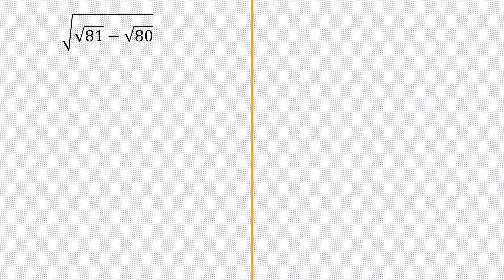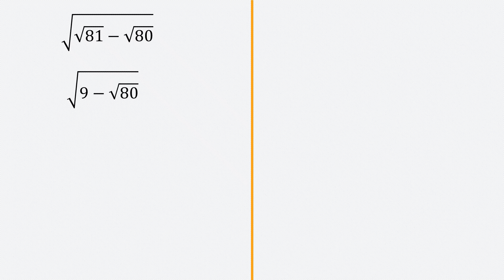The first thing we'll do is simplify the square root of 81, which we know gives us a result of 9. So we have the square root of 9 minus the square root of 80.